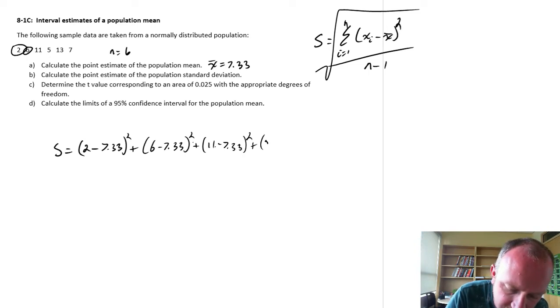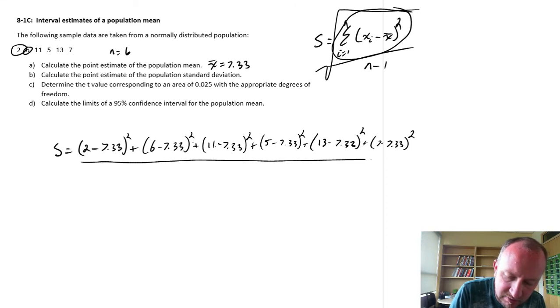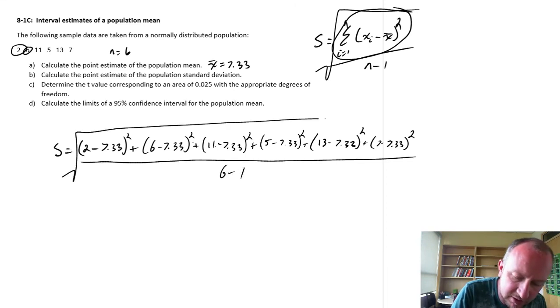And the next one is 5, and 13, and 7. So there's our numerator. There's all of our deviations squared and added up. And then we divide by n minus one, six minus one, and then we'll take the square root of all of that.